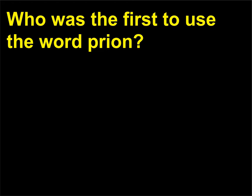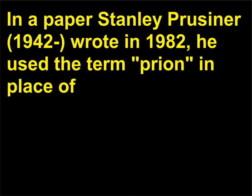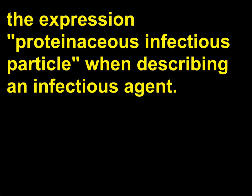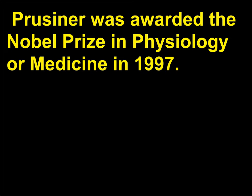Who was the first to use the word prion? In a paper Stanley Prusiner, 1942, wrote in 1982, he used the term prion in place of the expression proteinaceous infectious particle when describing an infectious agent. Prusiner was awarded the Nobel Prize in Physiology or Medicine in 1997.